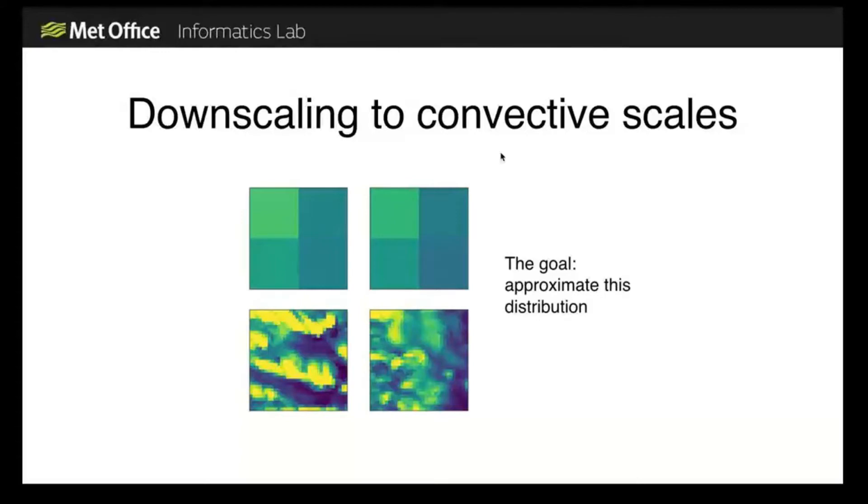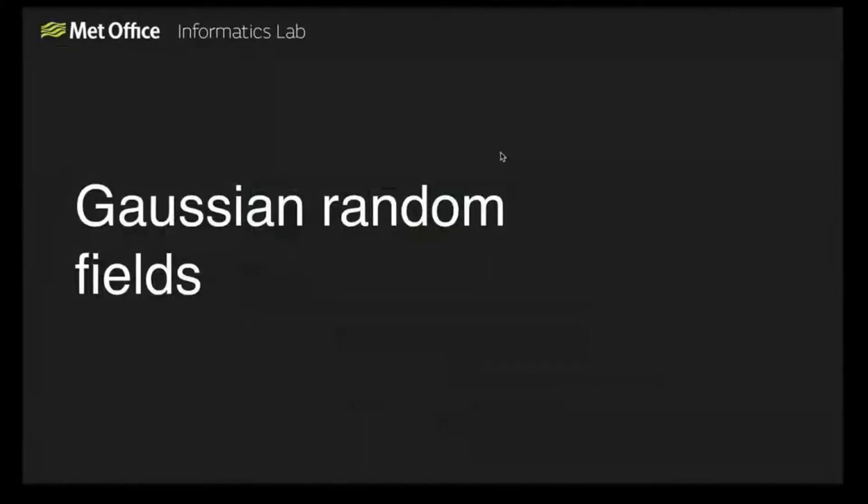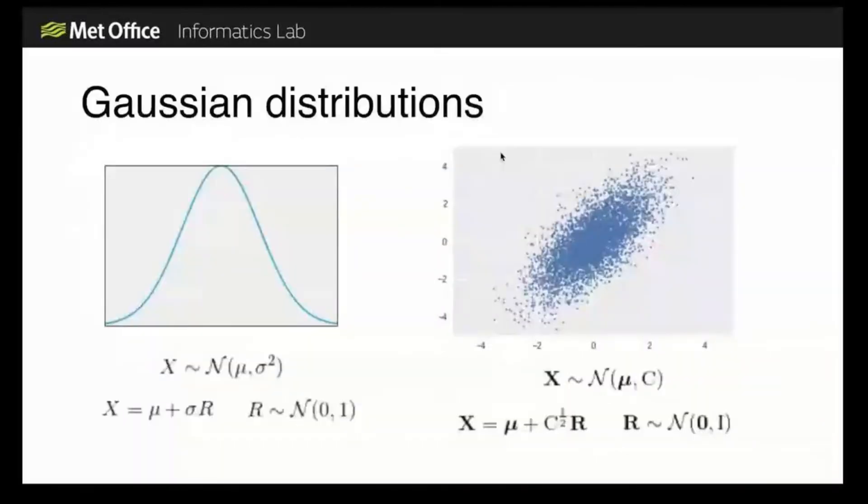This has some advantages in terms of not needing so much training, although some disadvantages as I'll discuss later. The underlying model is based on Gaussian random fields, or you might be more familiar with Gaussian processes - this is essentially the same thing, but applied to two-dimensional data that represents a geospatial field. I'll just give a brief introduction to these in case anyone is unfamiliar.